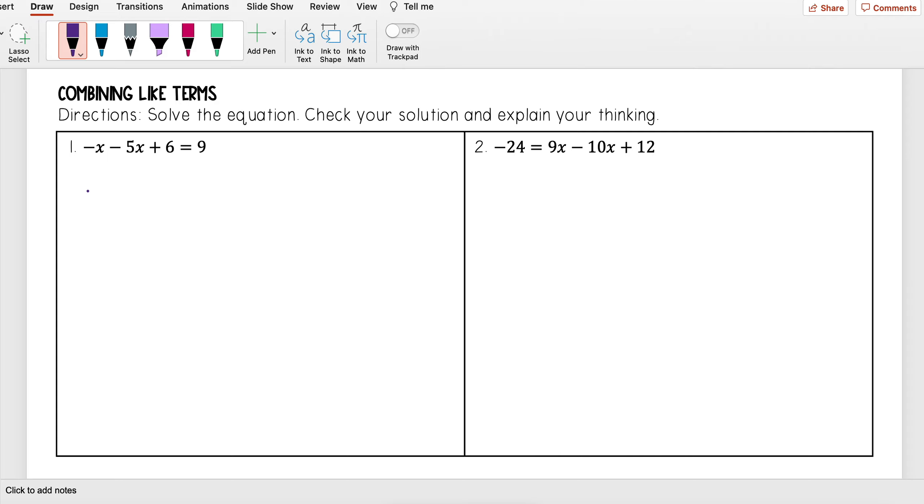So looking at this first one, I have negative x minus 5x plus 6 is equal to 9. My first step when I have an equation like this and I want to solve it is I'm going to go ahead and combine my like terms. And so I mean by that, I want to combine my two variables here. So I have negative x minus 5x.